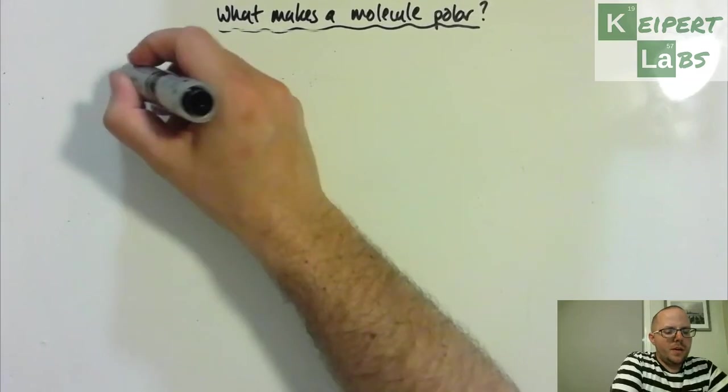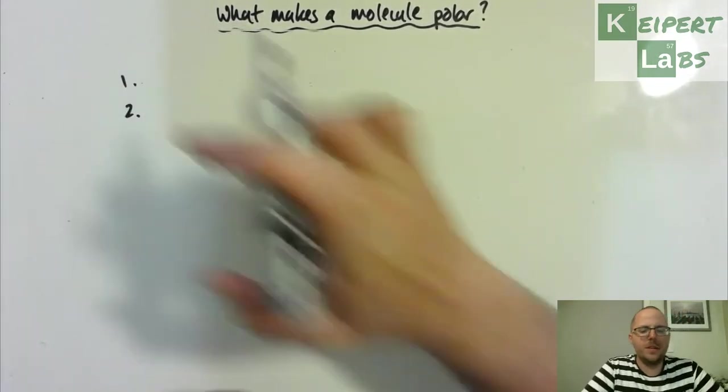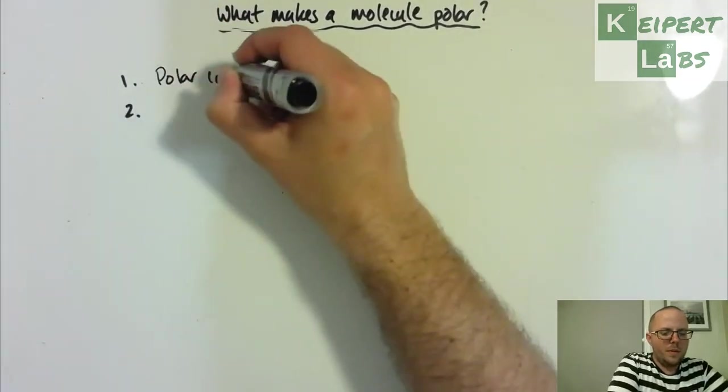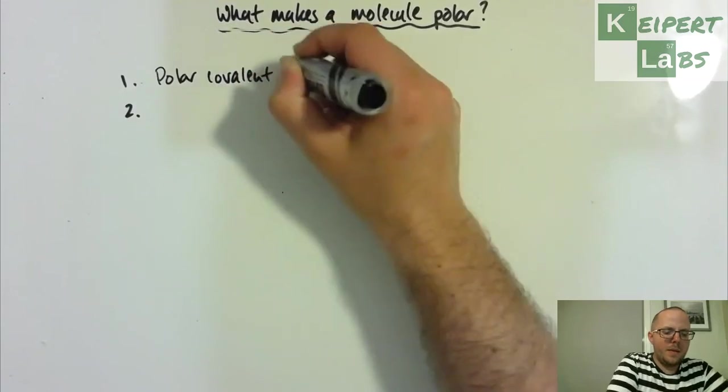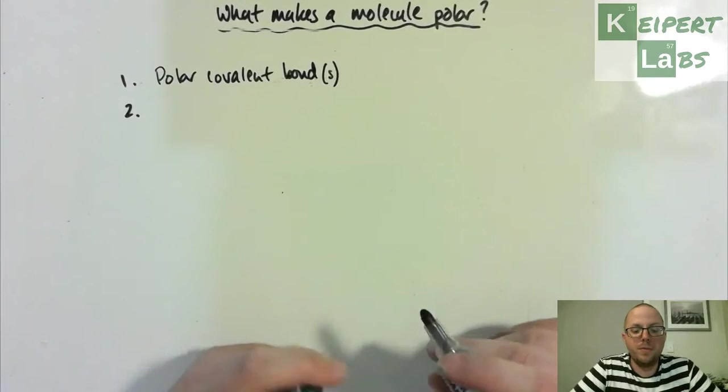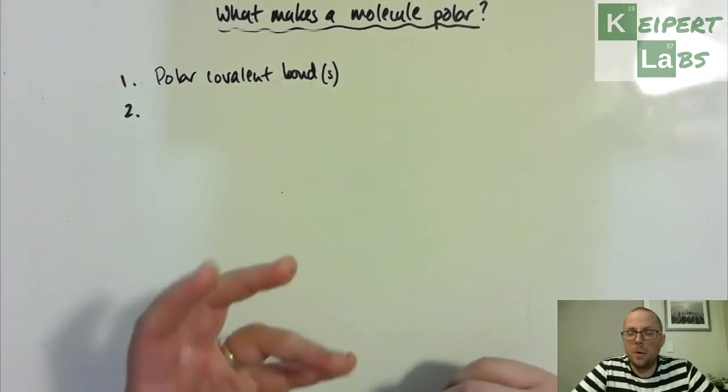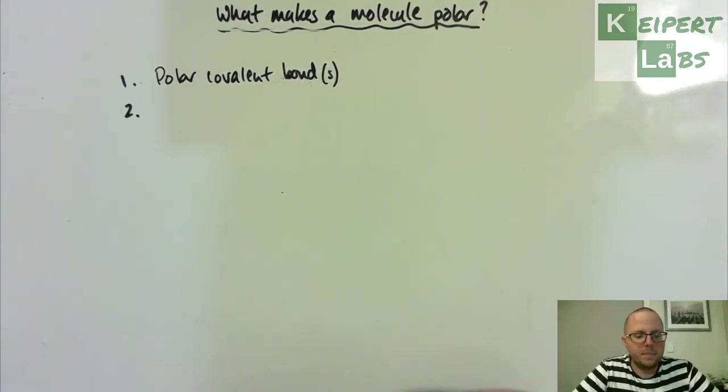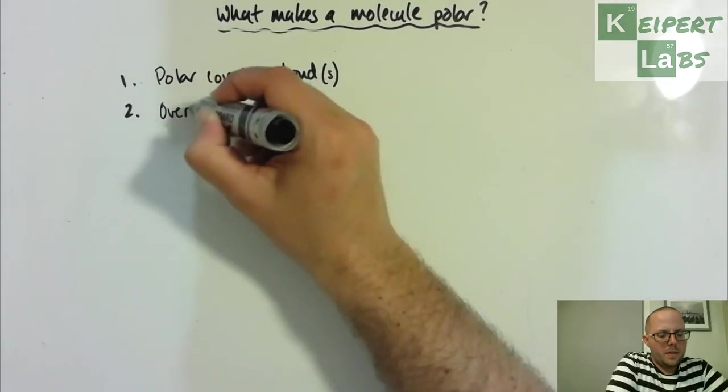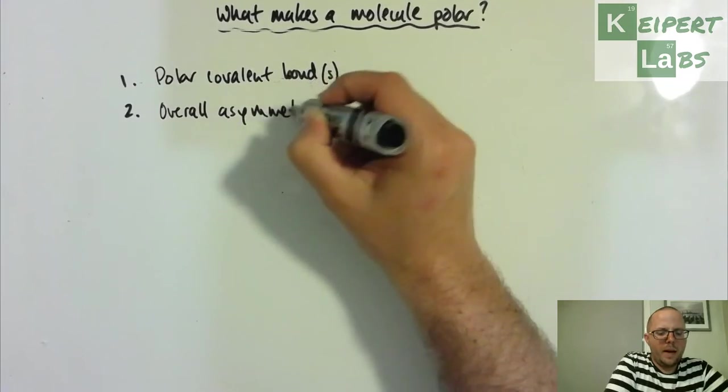So there's two main criteria that we need to make a molecule polar. First of all, there needs to be at least one polar covalent bond, if not more polar bonds, that exist within that molecule. It cannot be polar if they do not have that.